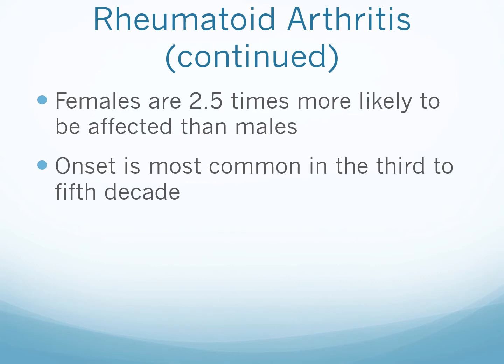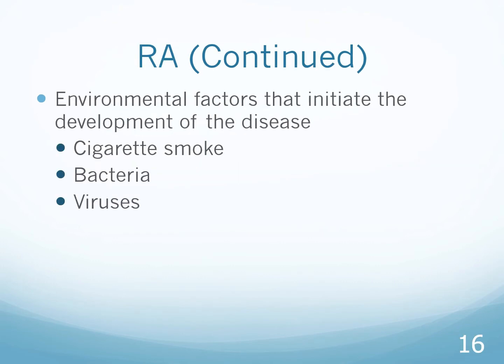Some environmental factors that can initiate the development of this disease include cigarette smoke — it can intensify RA and joint disease — bacteria, possibly through a secondary bacterial infection from a virus, and viruses themselves.